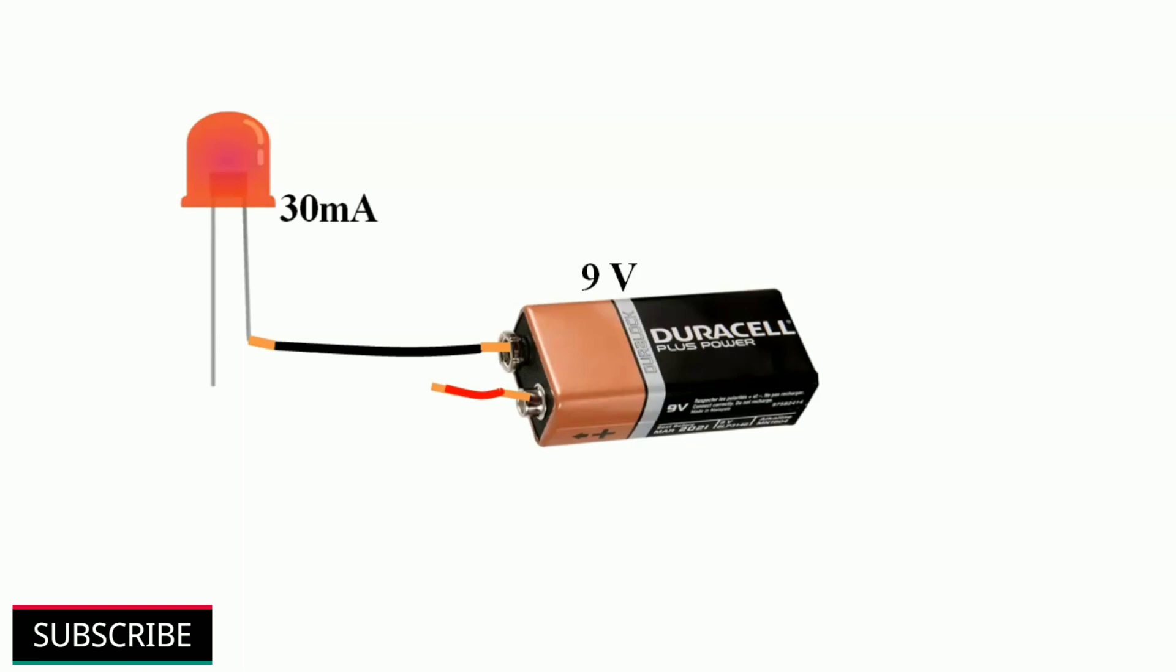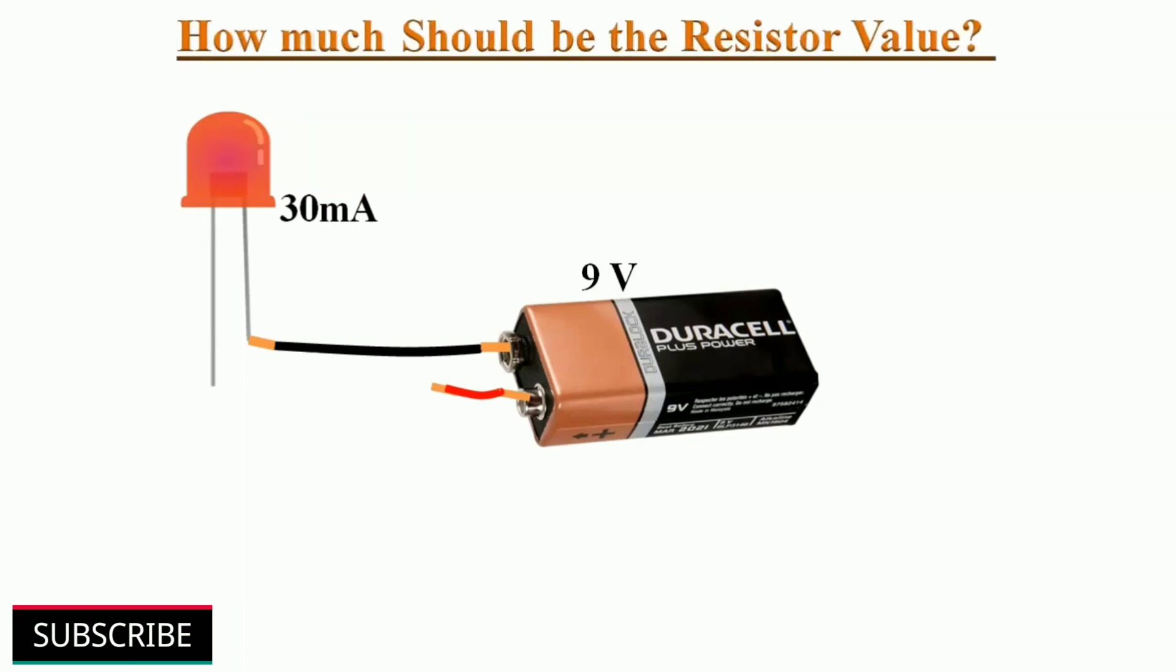Let us discuss this with one example. If we want to light up a LED with a 9V battery, as we know LED has a specified maximum current of only 30mA. If we connect them directly, the LED will burn out immediately because the battery will produce much higher current than 30mA. To prevent this excess current, we have to connect the LED and positive terminal of the battery through a resistor. So here, how much should be the resistance value?